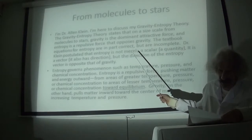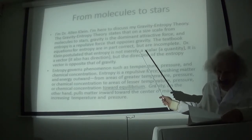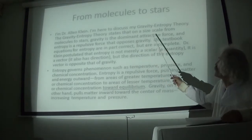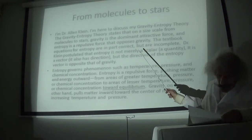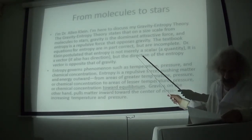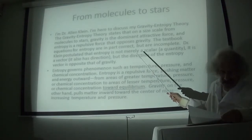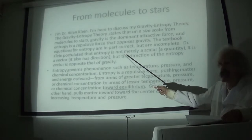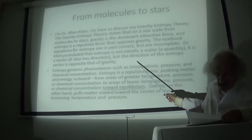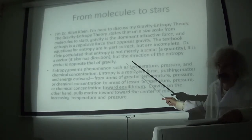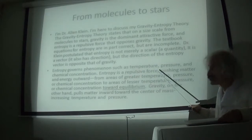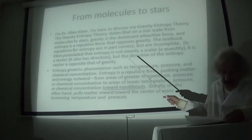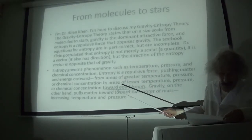Entropy is a repulsive force that opposes gravity. The textbook definitions of entropy are correct - they state that entropy is a scalar, but in actuality, I'm postulating that entropy is actually a vector. It has a magnitude and a direction, and the direction of the entropy vector is opposite that of gravity.